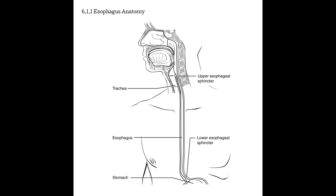The esophagus extends from the pharynx, travels inferiorly through the thoracic cavity, pierces through the diaphragm into the abdominal cavity, and then empties into the stomach. The lower end acts as a sphincter and is the entrance to the stomach. We call the connection of the esophagus to the stomach the gastroesophageal junction. Generally, the sphincter is closed unless we're eating or vomiting, but in people who have acid reflux, the sphincter can relax, allowing stomach acid to travel up the esophagus.